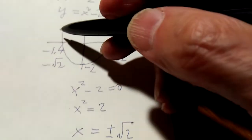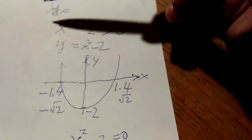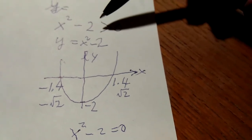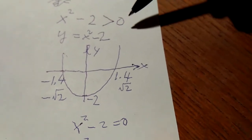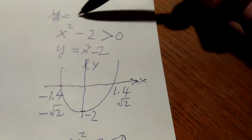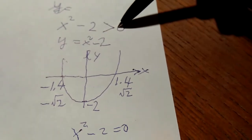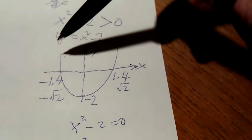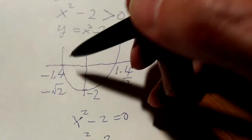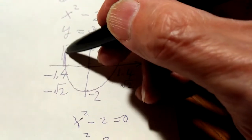Now once you have the graph, you can solve the inequality: x squared minus 2 is larger than 0. Which means the graph is positive. Which part of the graph is positive? It's this part — this part is positive.